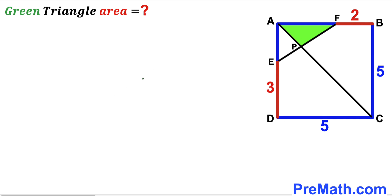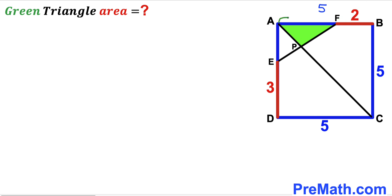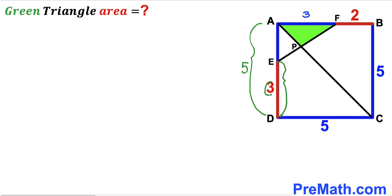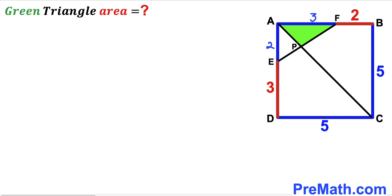Let's get started. Since we are dealing with square ABCD and its side lengths are 5 across the board, side AB is 5 units. We know segment BF is 2, so the remaining segment AF is 5 minus 2, which gives us 3 units. Likewise, the whole side is 5 units and segment DE is 3 units, so the remaining segment AE is 5 minus 3 equals 2 units.